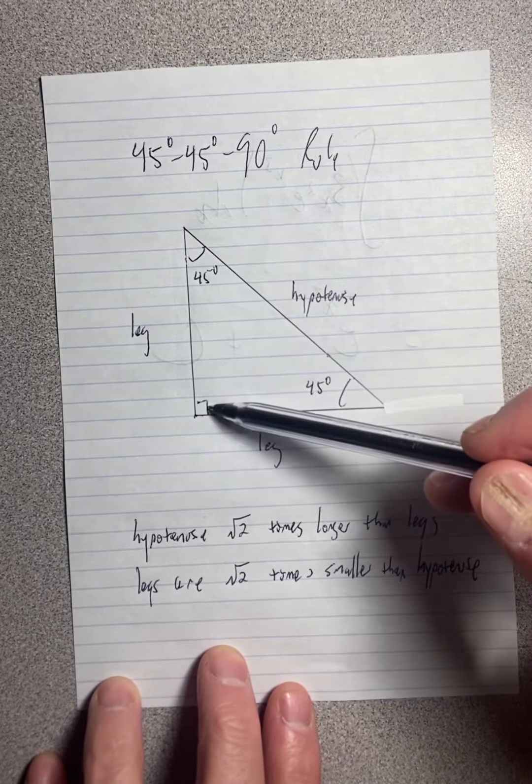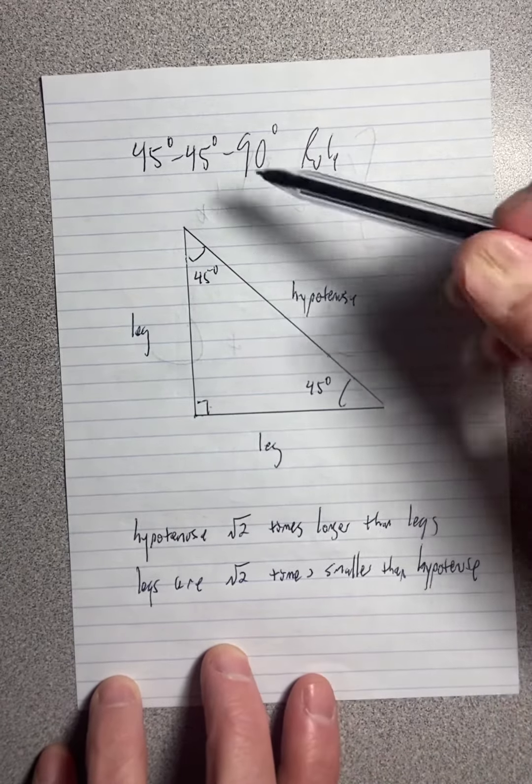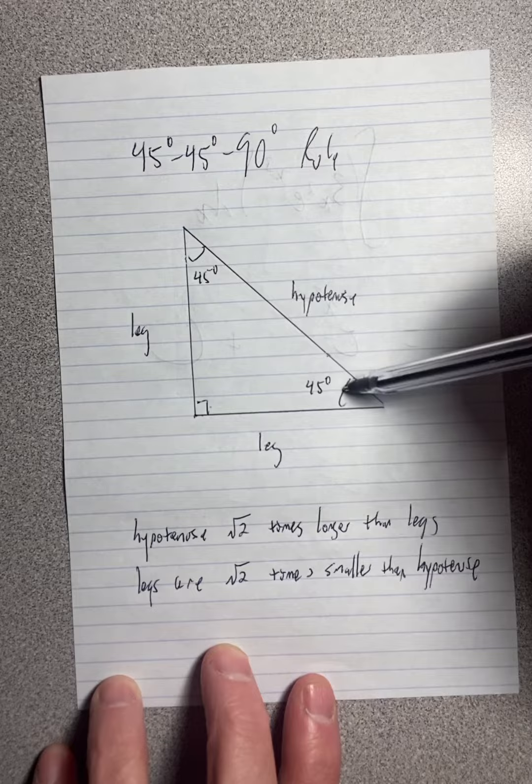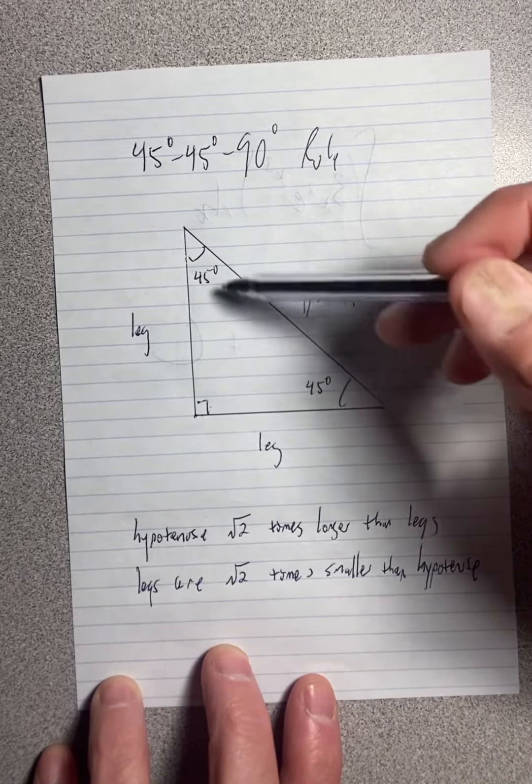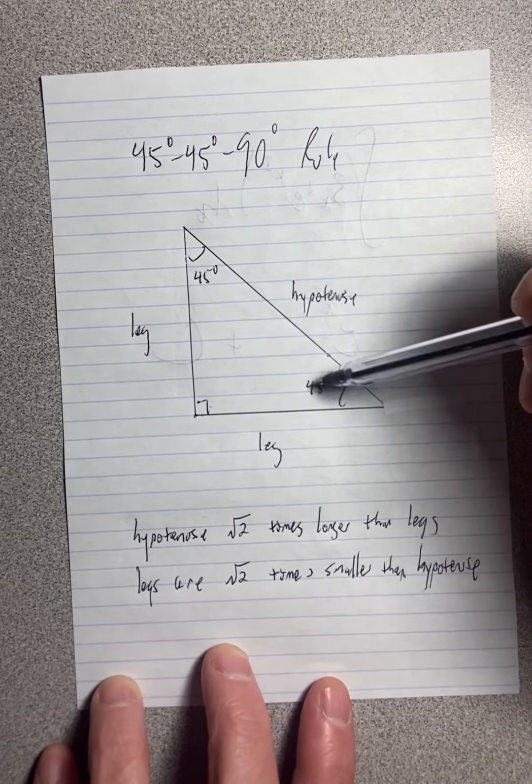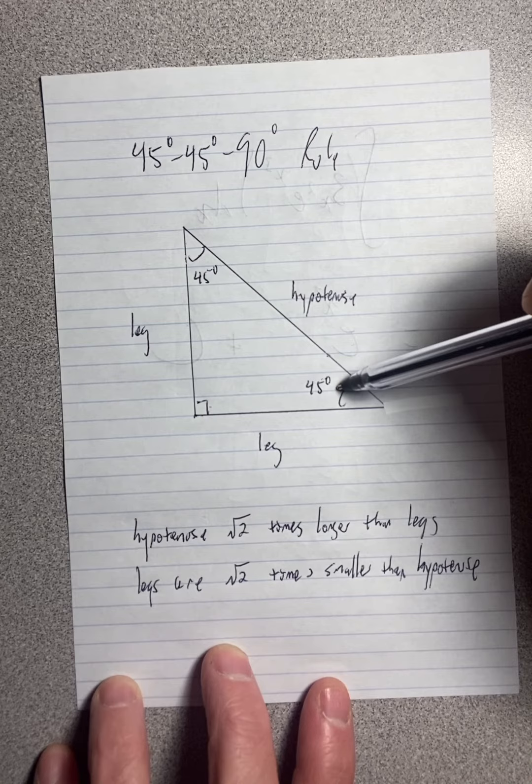If you have a 90 degree angle in a triangle, it's a right triangle. If the two other angles are equal, then they must be 45 because they have to add up to 90. Now, anytime you have two angles that are equal in a triangle, then the triangle is isosceles.